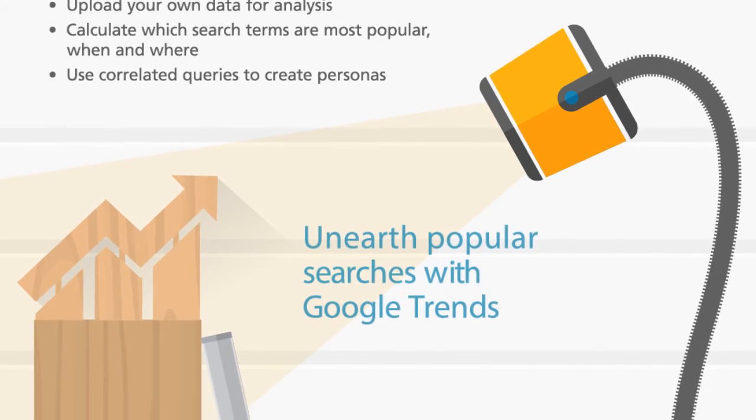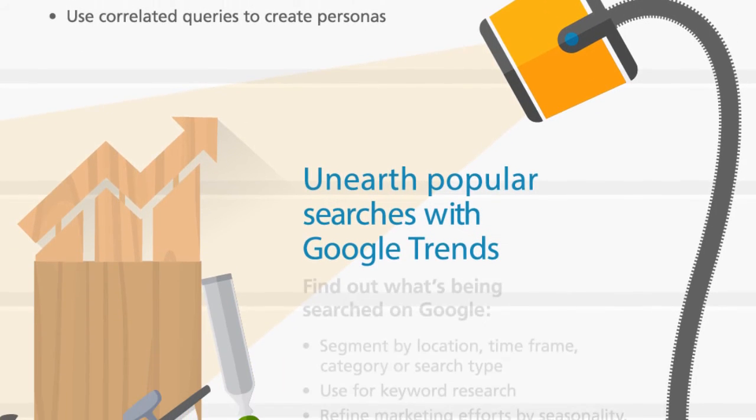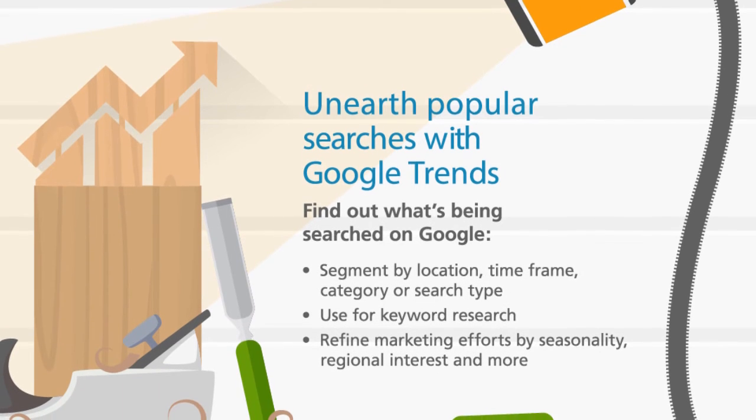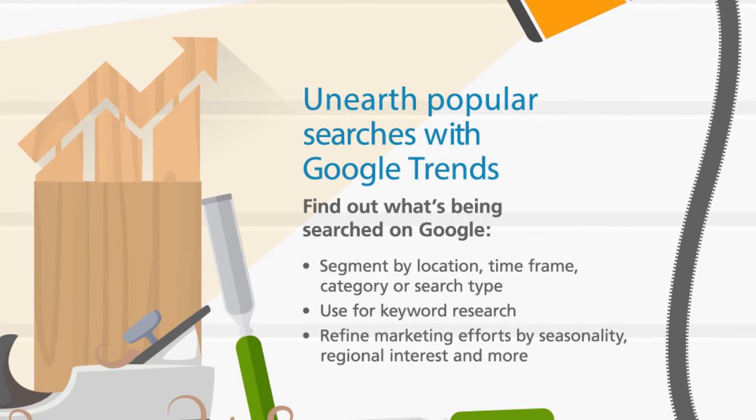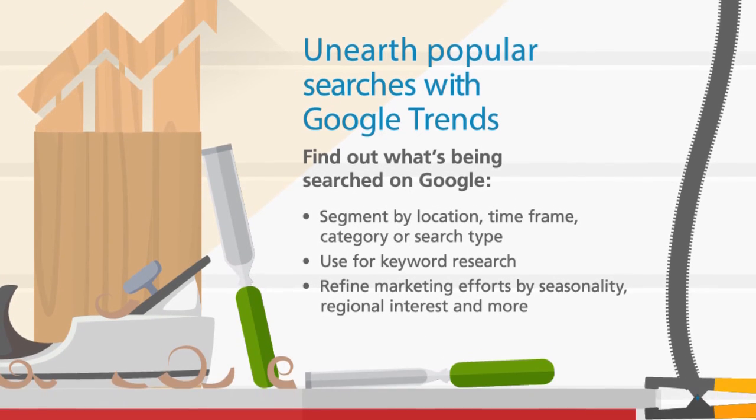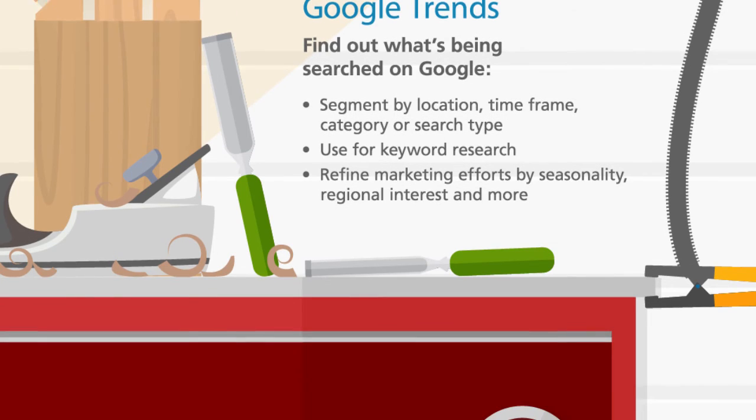Number four: Google Trends. This tool tells users what searches are trending on Google and provides insights into growing or declining interests in a topic.